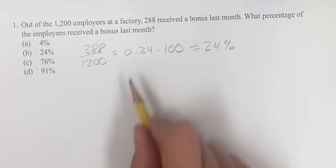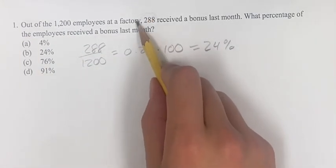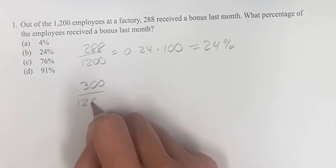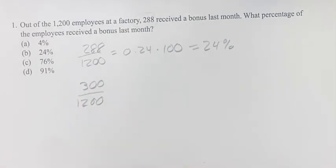If we say 288 divided by 1200, those aren't easy amounts to work with. But what would be? If we increase this to 300 divided by 1200, we're increasing it a little, so it's going to be slightly larger than the actual solution.